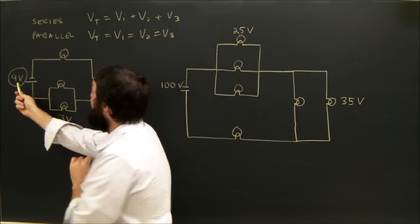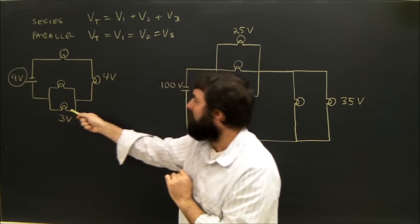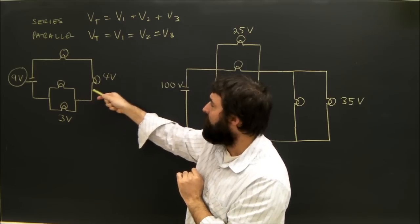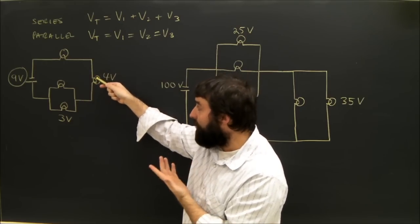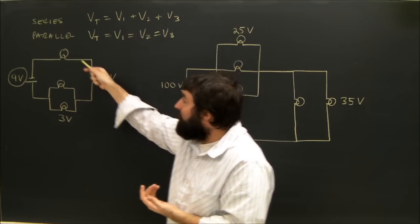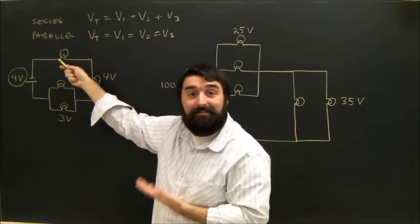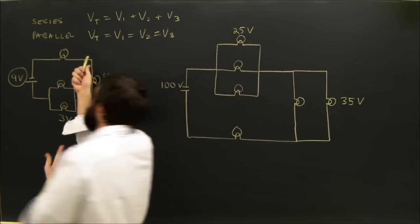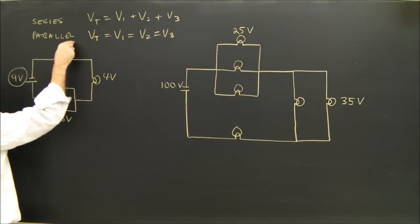So looking at this, we can see that if an electron left the battery and went through here, it would lose 3 volts. Going through this bulb, it would lose 4 volts. It's already lost 7 volts, so going through this bulb, it only has 2 volts to lose. So the voltage here has to be 2.